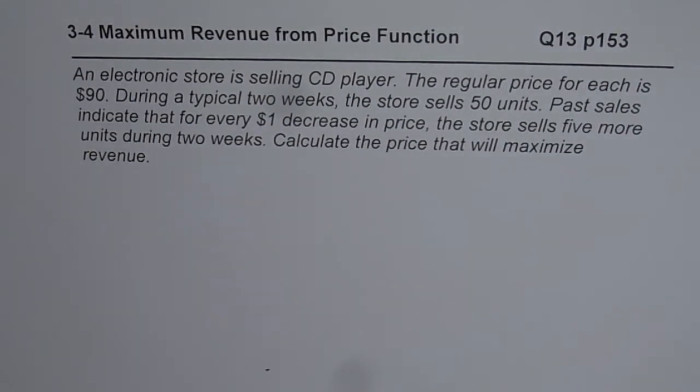We'll develop a relation for price function and find maximum revenue. An electronic store is selling CD players. The regular price for each is $90. During a typical two weeks, the store sells 50 units. Past sales indicate that for every $1 decrease in price, the store sells 5 more units during two weeks. Calculate the price that will maximize revenue.